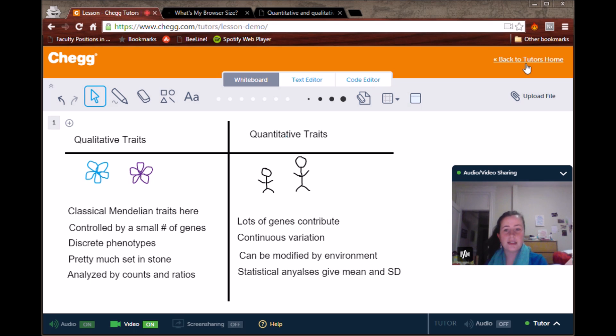When you're analyzing qualitative traits, you can use counts and ratios. For example, with the flower example that we talked about before, you count out all of the blue flowers, all of the purple flowers, all of the pink flowers, or whatever other color you have. And then you can make a ratio and say, for example, the ratio of white to blue to purple flowers is 1 to 2 to 1. So for every 1 blue flower, we have 2 purple flowers and 1 pink flower, or something like that. And that would be a classic Mendelian ratio.